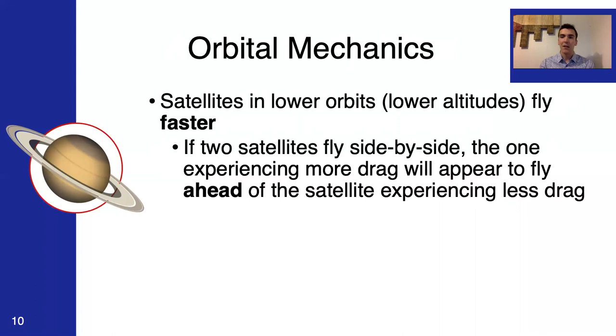This is basically because the satellite experiencing drag is brought into a lower orbit. So, when it's brought into a lower orbit, it speeds up. So, while it's flying fast relative to the other satellite, it's still losing more energy due to the forces of drag.